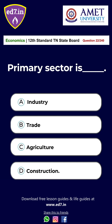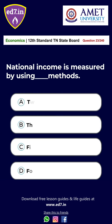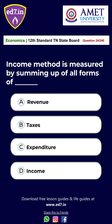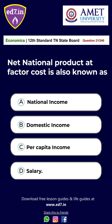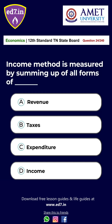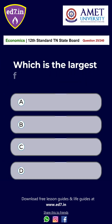Question 22: Primary sector is — A. Industry, B. Trade, C. Agriculture, D. Construction. The answer is Option C: Agriculture. Question 23: National income is measured by using how many methods? A. Two, B. Three, C. Five, D. Four. The answer is Option B: Three. Question 24: Income method is measured by summing up all forms of — A. Revenue, B. Tax, C. Expenditure, D. Income. The answer is Option D: Income.